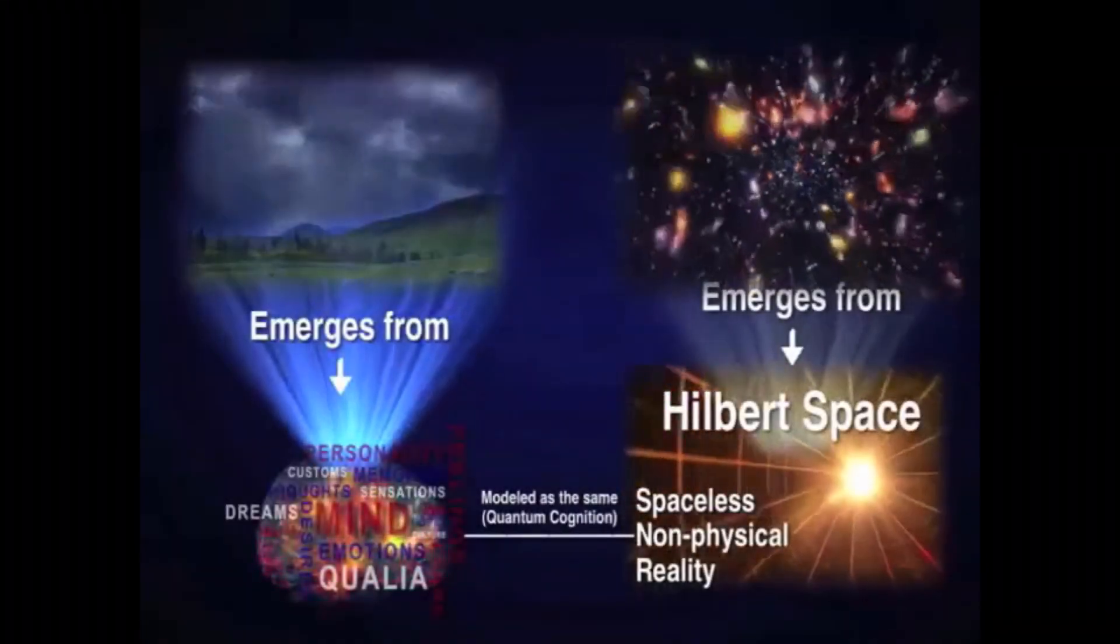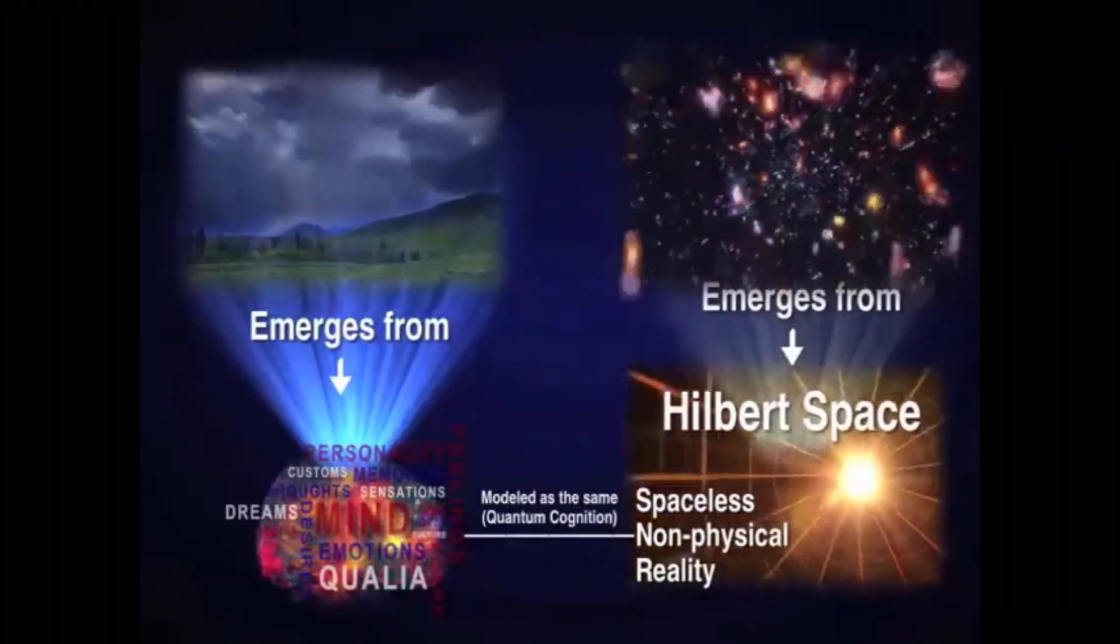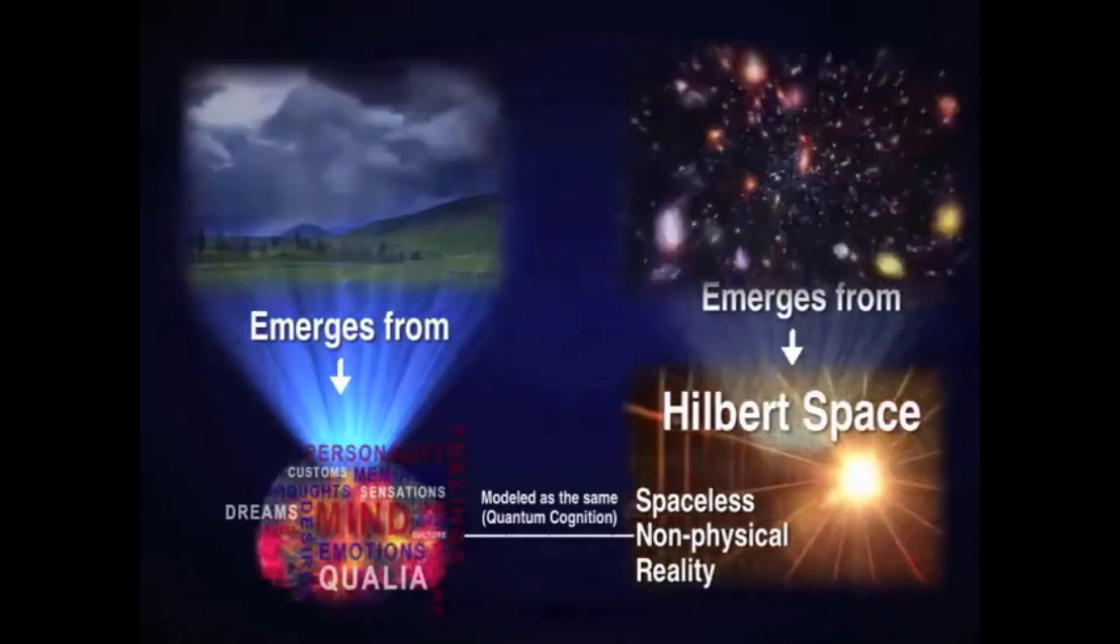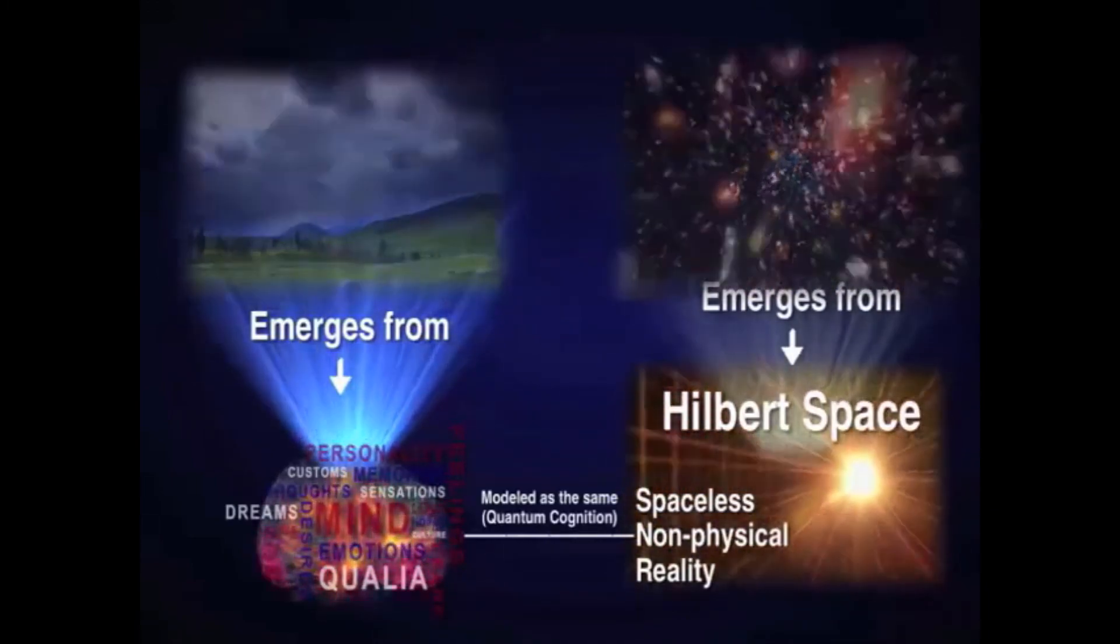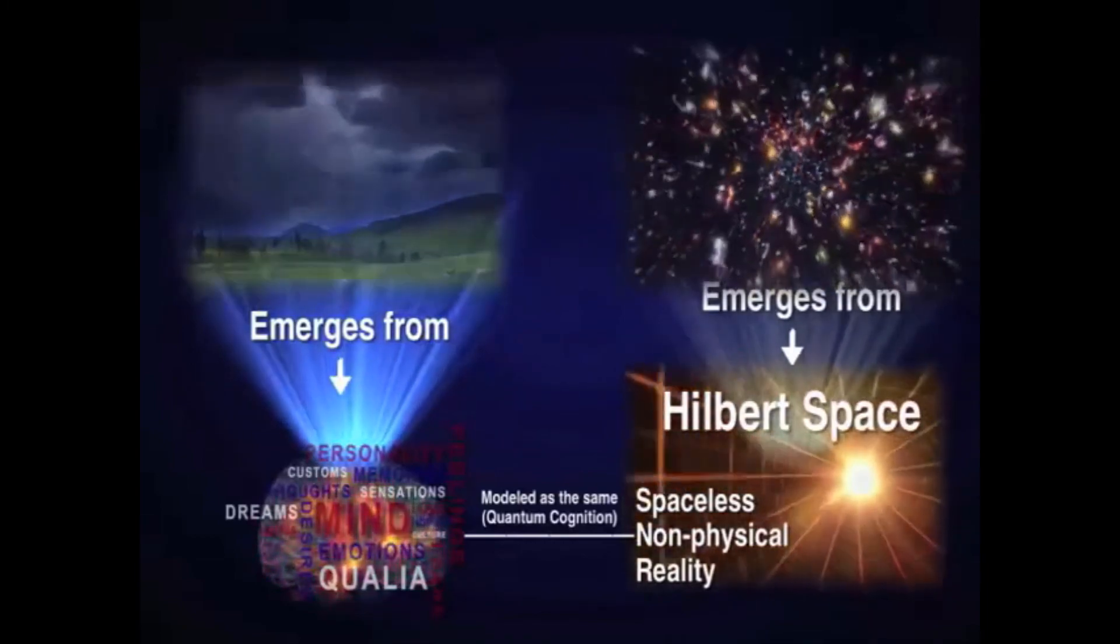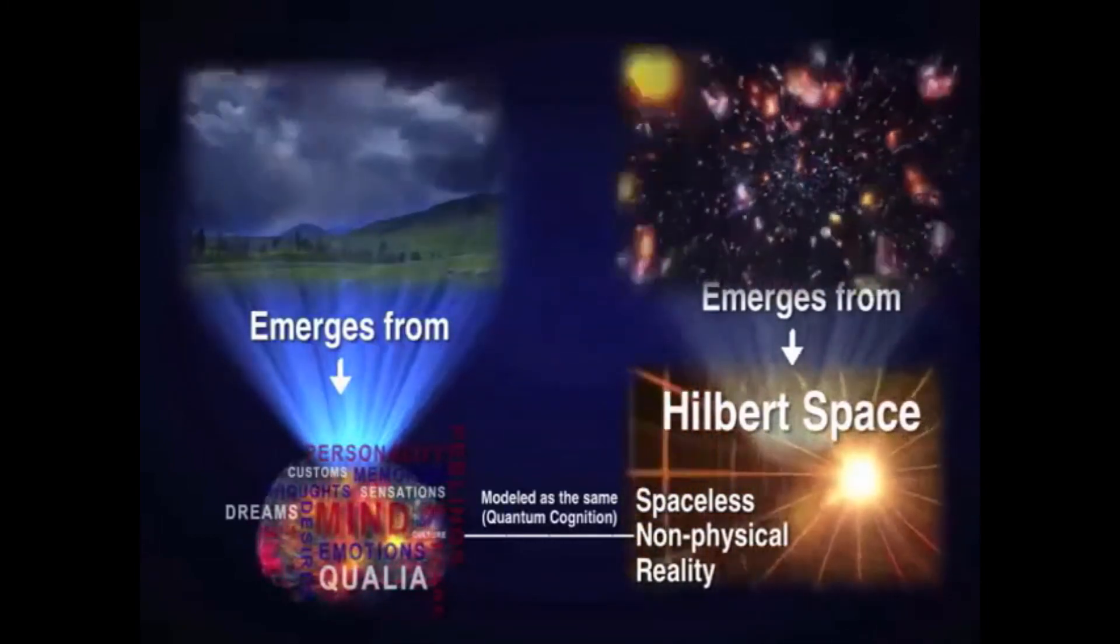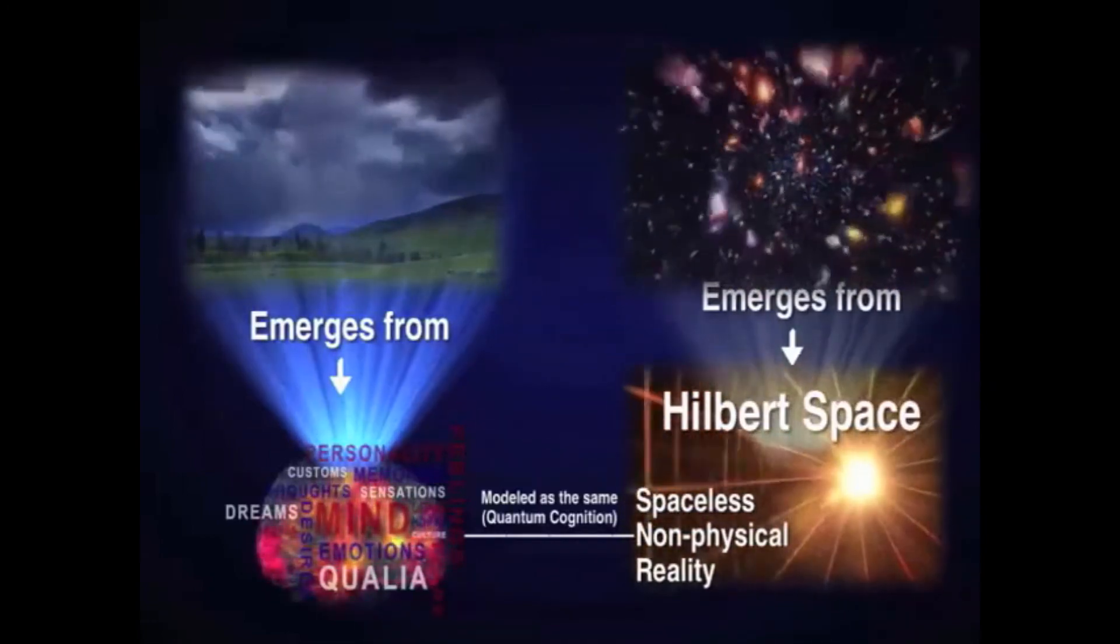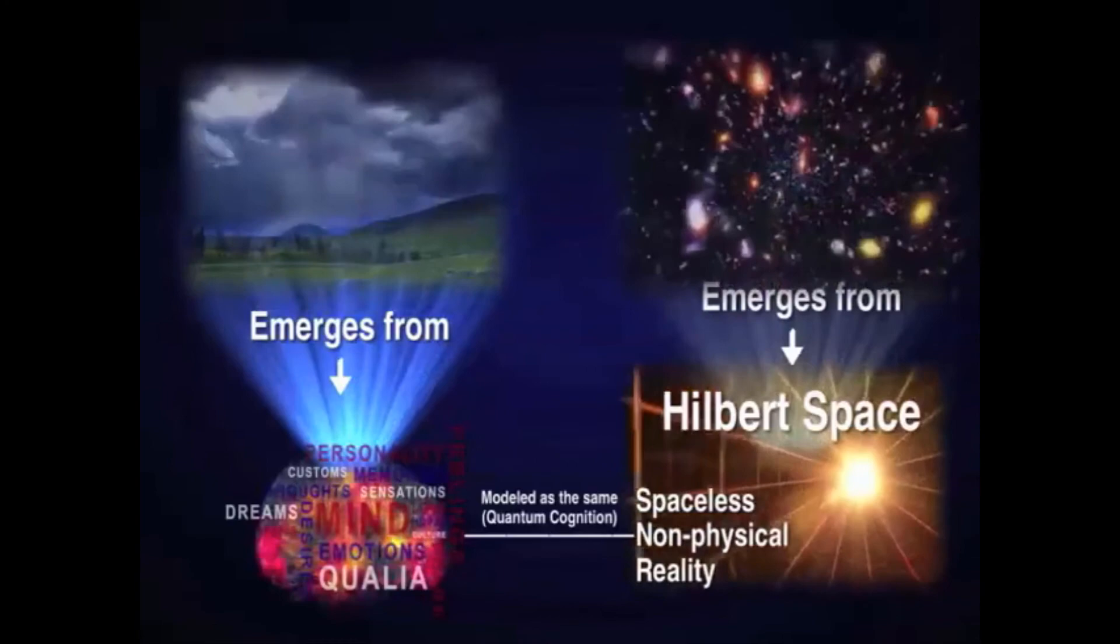With all this to take into account, it's clear that since we can model conscious thought processes as existing in Hilbert space, given the evidence from quantum cognition, and that space-time is emergent from Hilbert space, then when combining quantum cognition with the emergent space-time, the most parsimonious explanation matching the evidence is that space-time emerges from consciousness.